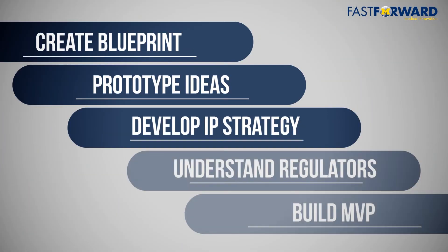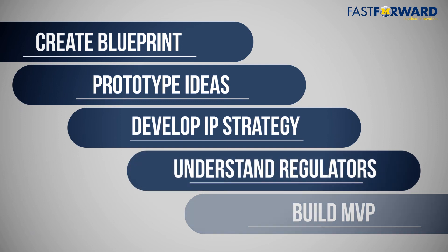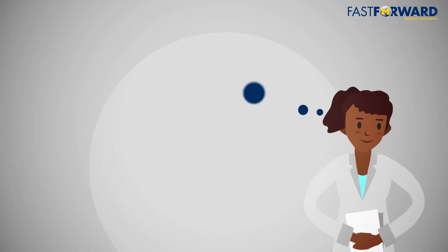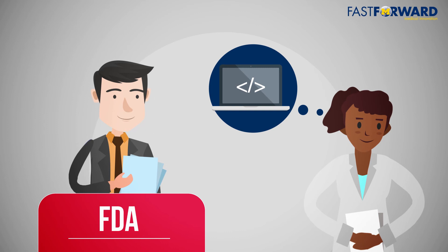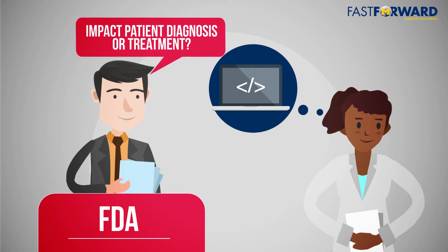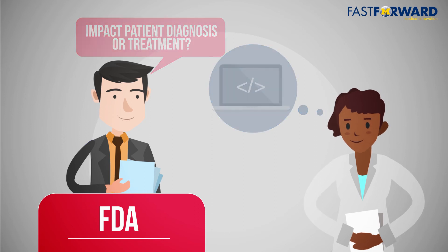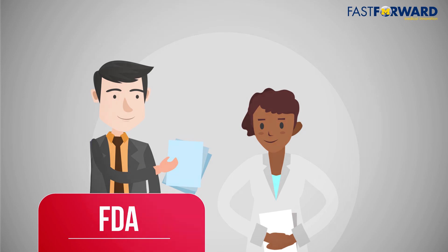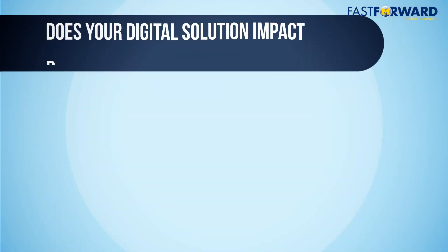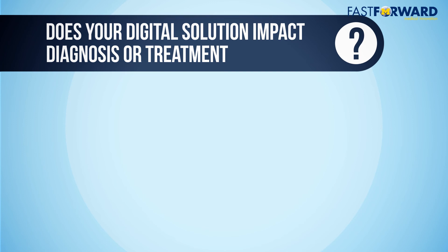The third step in the roadmap is to look at how regulatory considerations from the FDA and HIPAA will impact your development plan. First, you need to determine if the FDA will have purview over your digital health technology. The FDA regulates medical technologies that have the potential to impact patient diagnosis or treatment. For a general guideline, you can follow this series of questions, but make sure to seek guidance from a regulatory professional to confirm your plan. Does your digital solution diagnose or provide clinician decision support? If your technology treats, diagnoses, or provides decision support, the FDA may retain the right to regulate your technology.